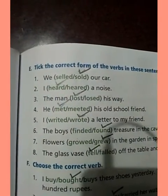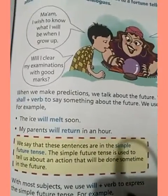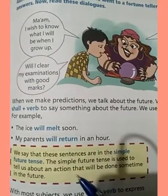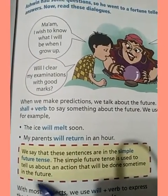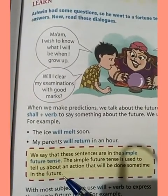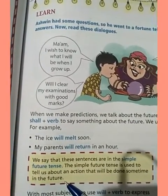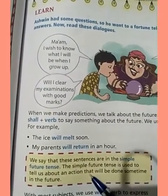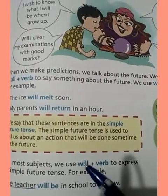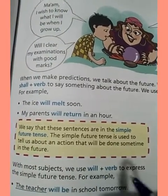Now, future tense. The simple future tense is used to tell us about an action that will happen sometime in the future. Whatever action is going to happen in the future, that is the simple future tense. We use 'will' plus the verb to express the simple future tense.